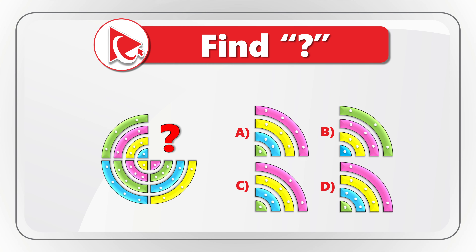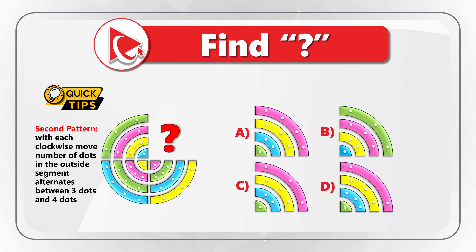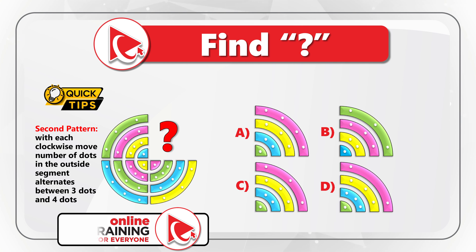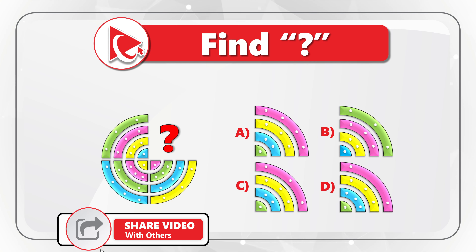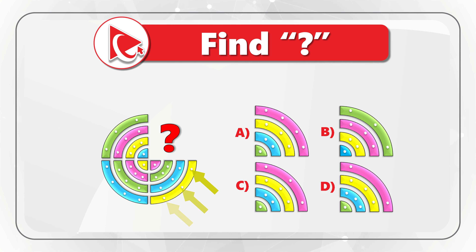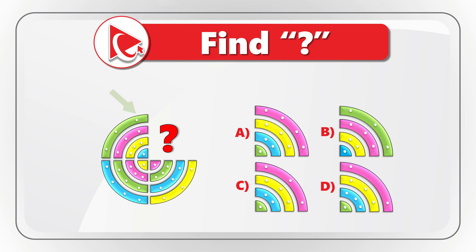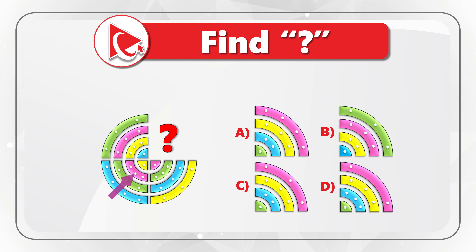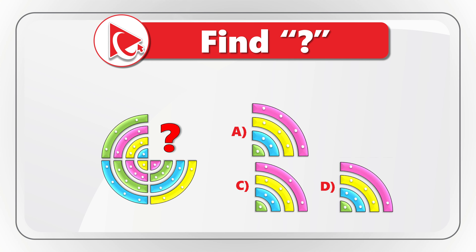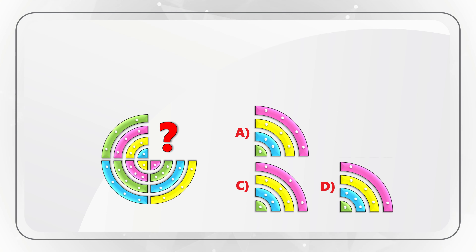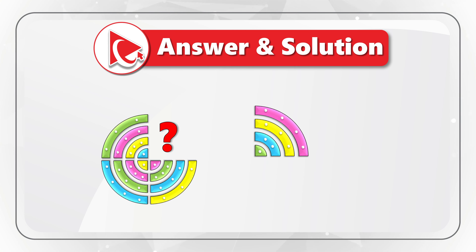Color moving outward is not the only pattern. The second pattern is that with each clockwise move, the number of dots in each section alternates between 3 and 4, but only on the most outside segments. The yellow segment at 5 o'clock has three dots, the blue one at 7 o'clock has four dots, and the green segment has three dots again — meaning the missing section should have four dots. Following the pink segment, it should be in the most outside position in the missing segment. Only choice A has four dots on the outside, so the correct answer is choice A.